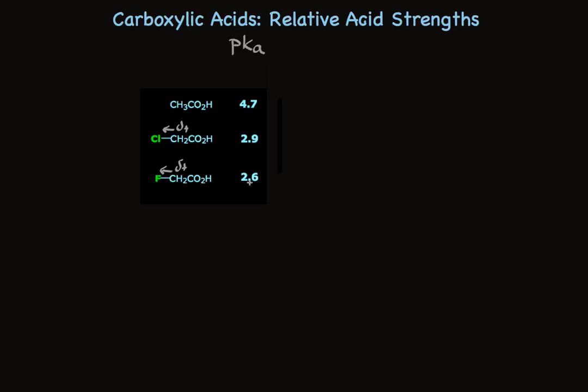And for that reason, the pKa's are smaller, the acids are stronger. Fluorine is more electronegative than chlorine, so it pulls harder, and the acid is a bit stronger.